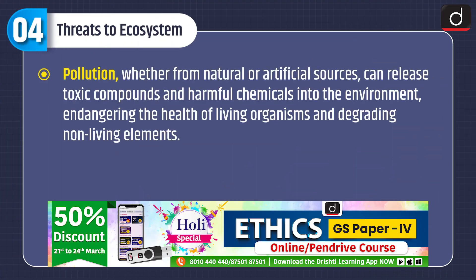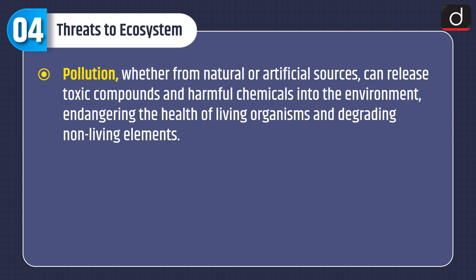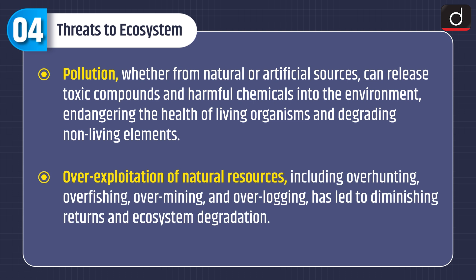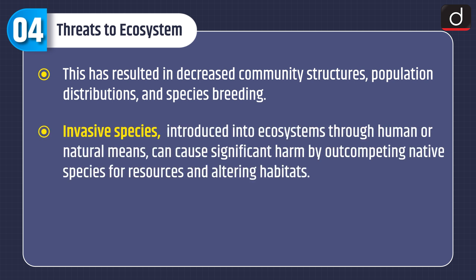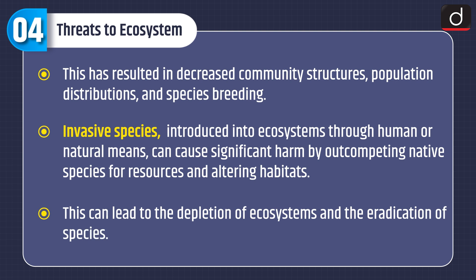Moving on to threats to ecosystems. Pollution, whether from natural or artificial sources, can release toxic compounds and harmful chemicals into the environment, endangering living organisms and degrading non-living elements. Overexploitation of natural resources — including overhunting, overfishing, overmining and overlogging — has led to diminishing returns and ecosystem degradation, resulting in decreased community structures, population distributions and species breeding. Invasive species introduced through human or natural means can cause significant harm by outcompeting native species for resources and altering habitats, leading to depletion of ecosystems and eradication of species.